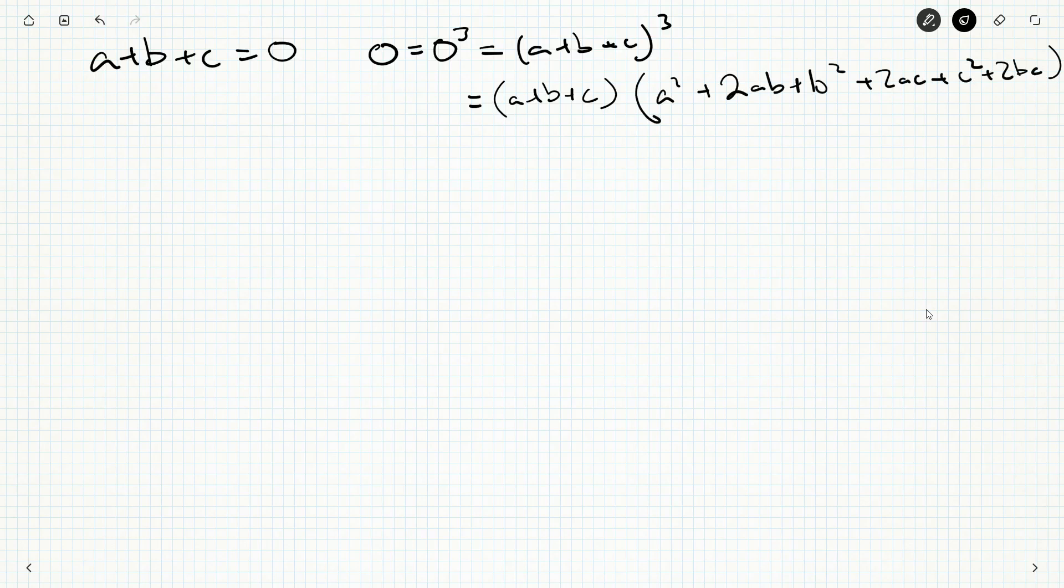So squaring this would be a squared plus 2ab plus b squared plus 2ac plus c squared plus 2bc. Now we multiply this guy by a plus b plus c. So a times this, so it would be a cubed plus 2a squared b plus ab squared plus 2a squared c plus ac squared plus 2abc. Hey, 2abc. abc is one of the things we're trying to talk about.